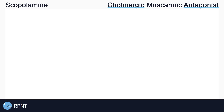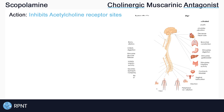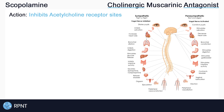Cholinergic antagonist means that scopolamine inhibits acetylcholine from binding to its receptor sites. Acetylcholine is the main neurotransmitter involved in our parasympathetic nervous system, also known as the rest and digest nervous system. So scopolamine inhibits or decreases our body's rest and digest functions.